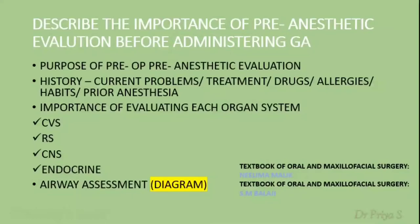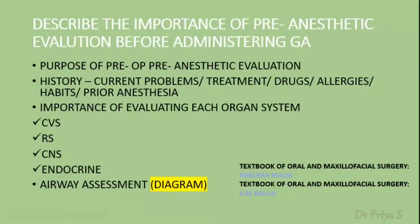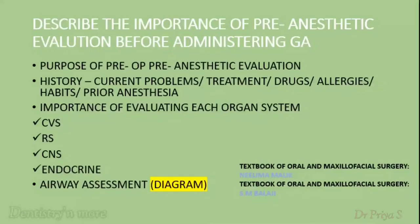Under the respiratory system, ask the patient about history of recent cough, cold, asthma, and URTI. For CNS, ask about history of headache, epilepsy, and dizziness. Under the endocrine system, mention diabetes mellitus and thyroid dysfunction. Finally, write about airway assessment — write about the Mallampati airway assessment with the help of a diagram. There are four classifications which you need to mention with a diagram. This is how you answer the question on the importance of pre-anesthetic evaluation before administering GA.